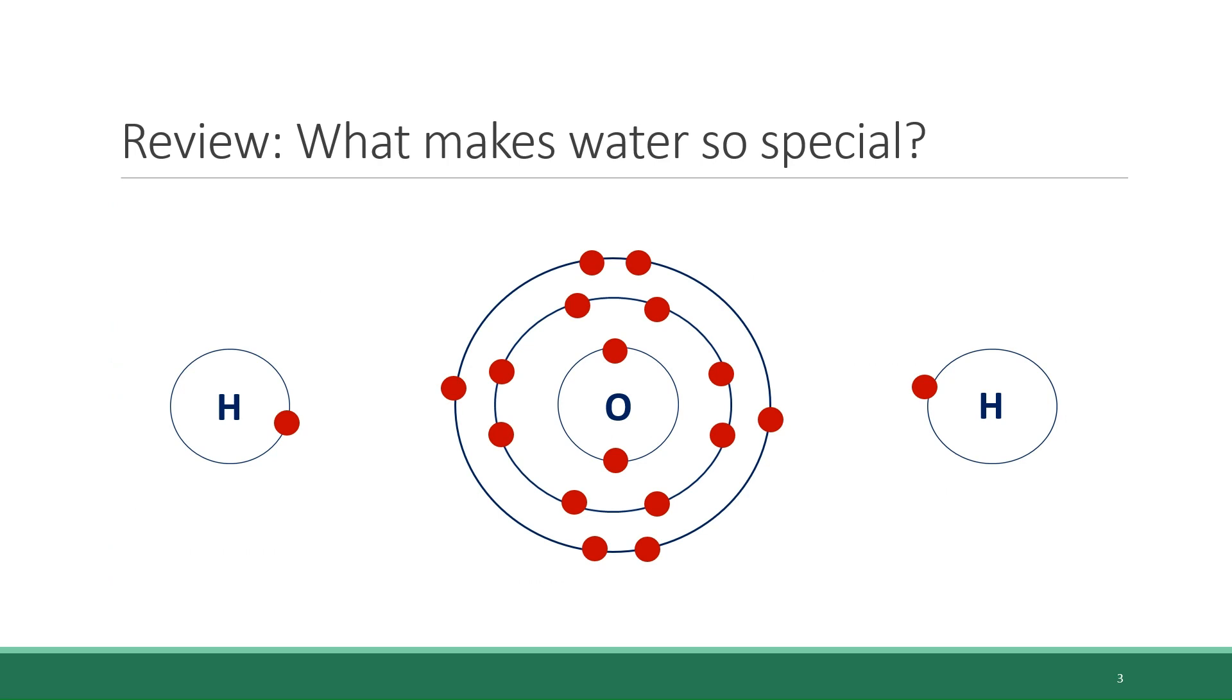To start, we need to review what we previously learned about the molecular construction of water. You know that water is H2O, which means that it is comprised of two atoms of hydrogen H and one atom of oxygen O. These atoms are covalently bonded to each other, meaning that they share their electrons with each other.